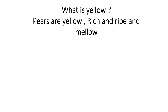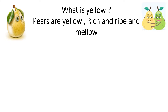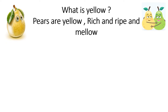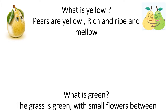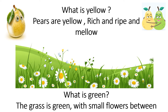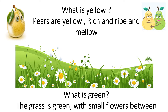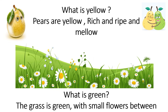What is yellow? Pears are yellow, rich and ripe and mellow. And what is green? The grass is green with small flowers between.